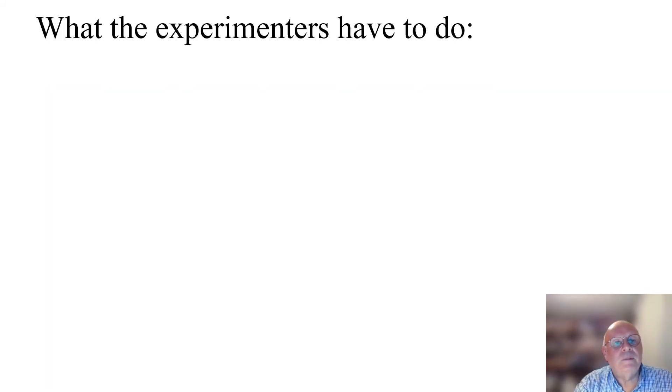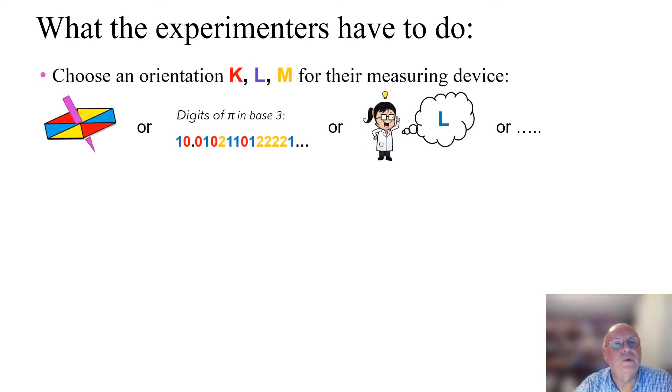What do the experimenters on Mars and on the Earth have to do? First, they have to choose an orientation, K, L, or M, for their measuring device. And they can do this any way they like. They could spin a spinner or express pi in base 3 and use the digits of pi to give the orientation.